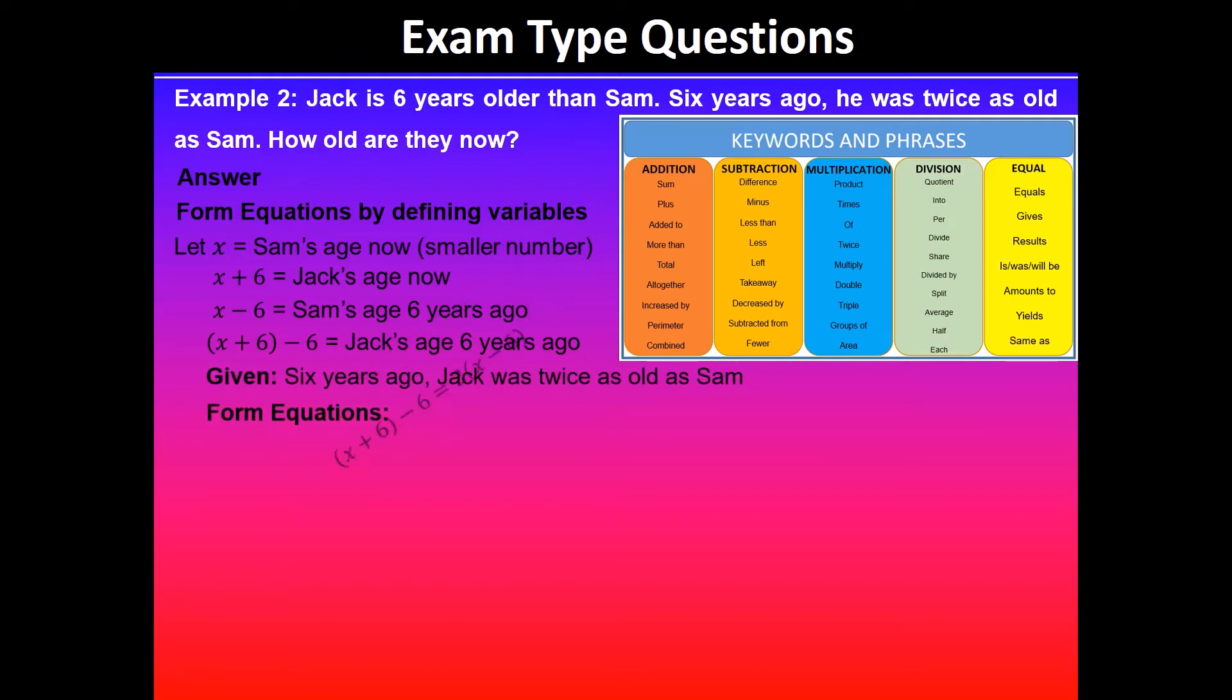So we'll use that information to form equations. Jack is x plus six take away six, which was six years ago, and he was twice as old as Sam, so two times x minus six. So we will expand and simplify this.